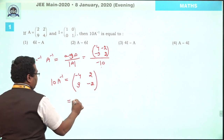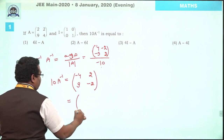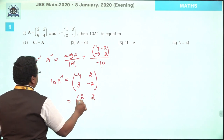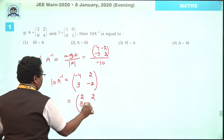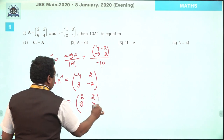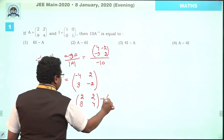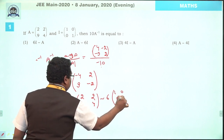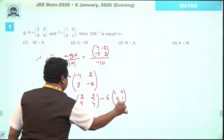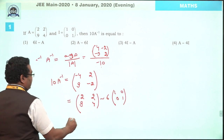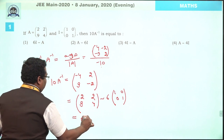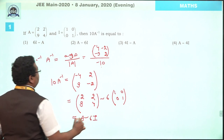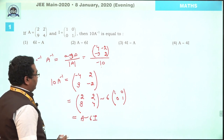So 10 times of the A inverse matrix becomes the matrix with entries 2, 2, 9, 4 minus 6 times the identity matrix. So the answer is A minus 6I, that is option number 2.